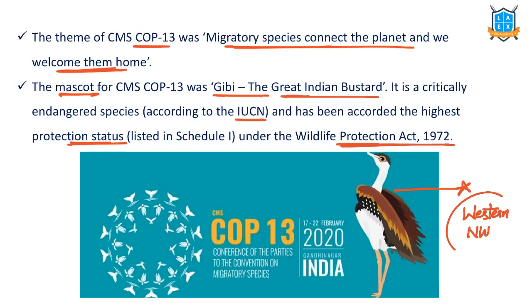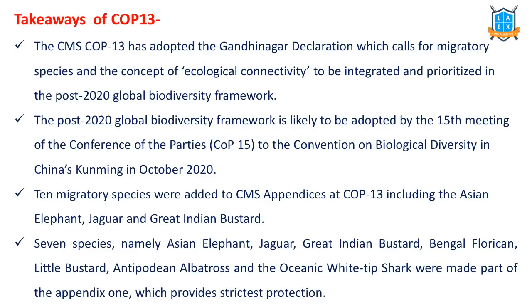The Great Indian Bustard is commonly found in Western and North-Western India because these species require grasslands — scrub grasslands. Loss of habitat is one of the major reasons for increasing vulnerability to these species. During COP 13 we adopted the Gandhinagar Declaration. Remember: UNCCD COP 14 was in Delhi with the New Delhi Declaration; CMS COP 13 was in Gandhinagar with the Gandhinagar Declaration. It called for protection of migratory species and emphasized ecological connectivity in biodiversity conservation.